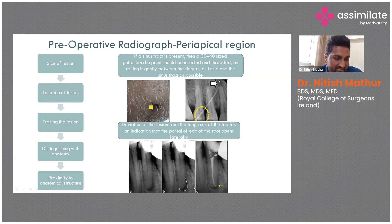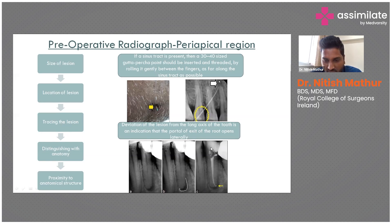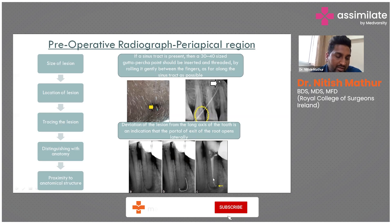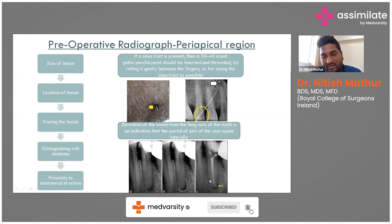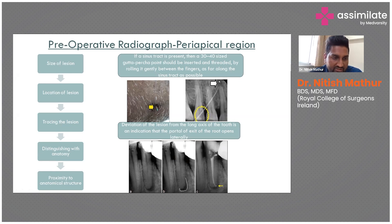The most significant factor is the location of the lesion. If the location is not in line with the long axis of the tooth, it indicates a lateral canal or an accessory canal in that area.